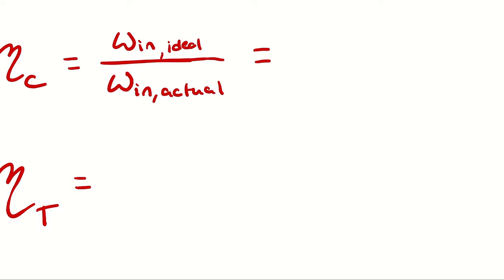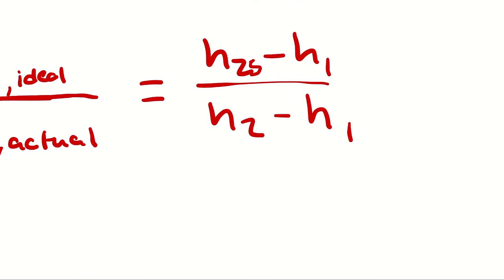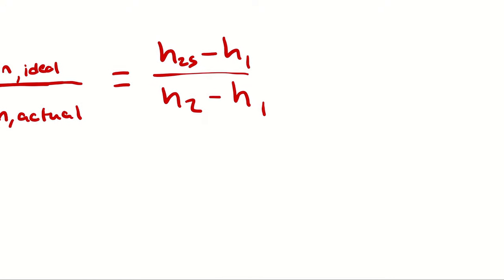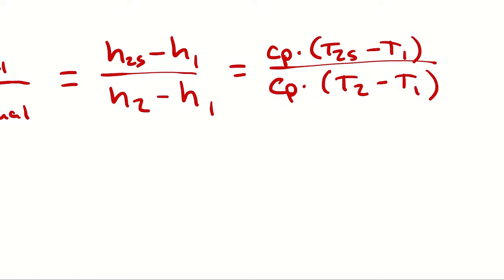And from our energy balance on the compressor from the previous version of this problem, we know the work in is going to be h2 minus h1. The only difference between these two equations is that in the numerator, this is h2s minus 1. That's what the outlet enthalpy would be if everything were perfect, if there were no losses. And then because we're using the cold air standard analysis, we can plug in CP times delta T in place of delta H. And because these are evaluated at the same temperature, 300 Kelvin for both, I can cancel the CPs.